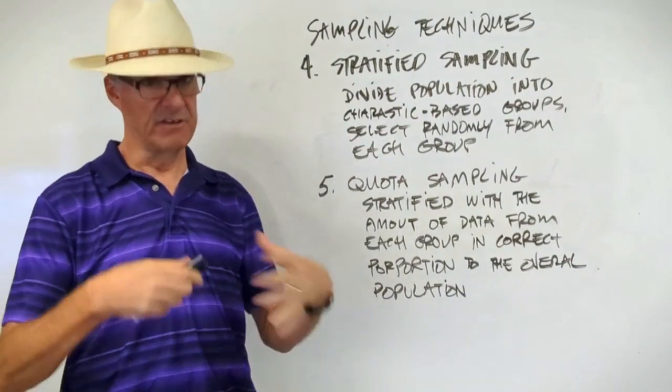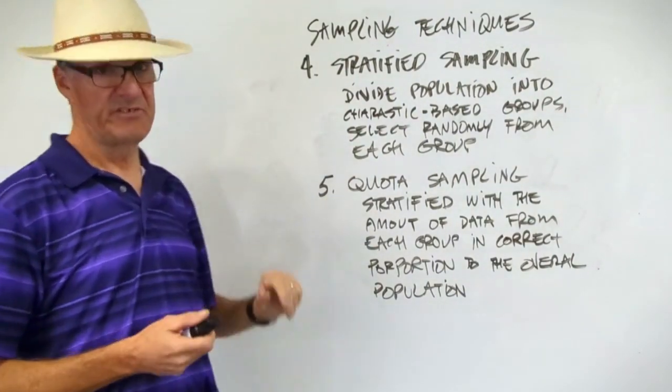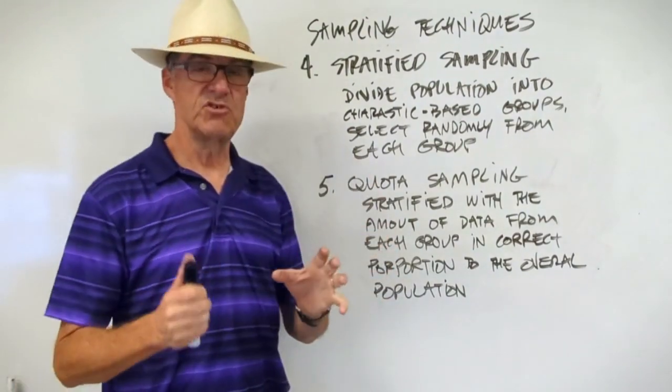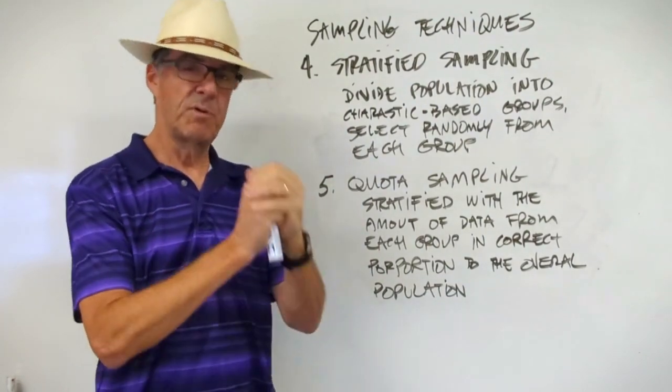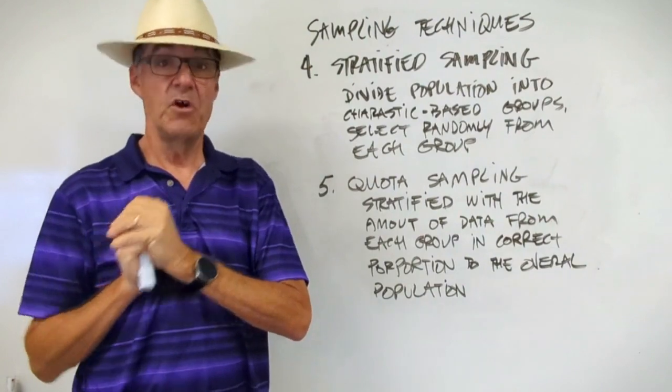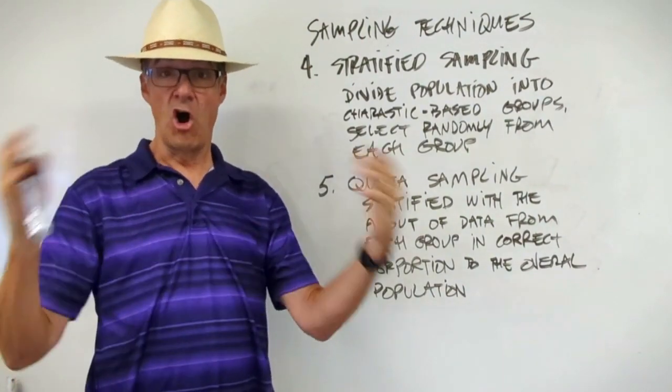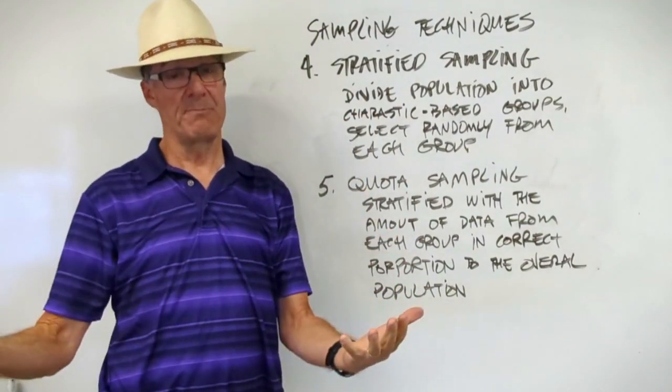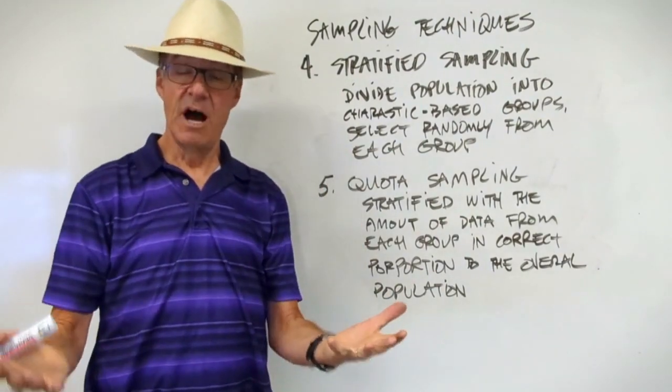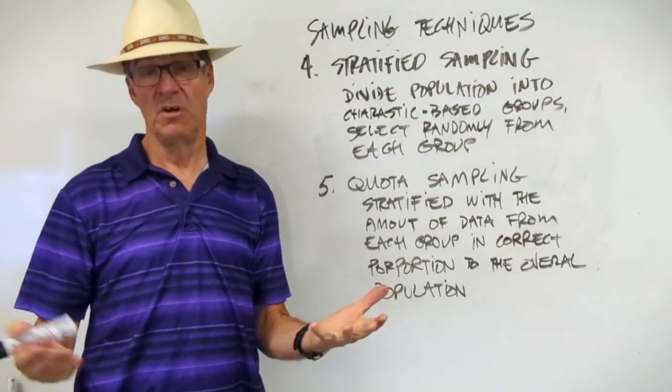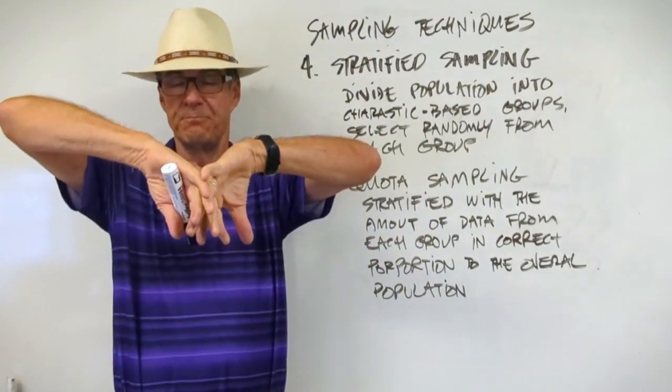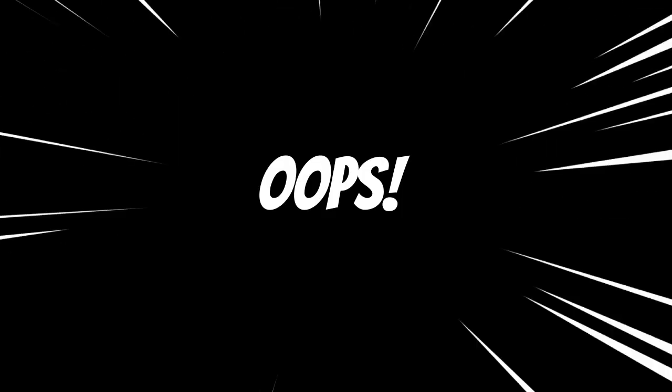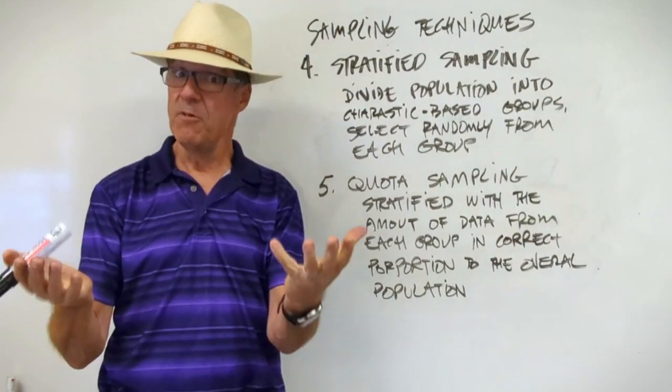Now the last one, and the best, is quota-based sampling. So now what we do is it's the same as stratified, but now the amount of data from each group is in proportion to that group's proportion to the whole population. For example, let's say we're sampling from all students in one class, but I have 70 percent boys and 30 percent girls. So if I do random, I might not get 70-30 because that's random. So what I'm going to do is I'm going to divide it, make sure that my data is 70 percent girls, 30 percent boys.